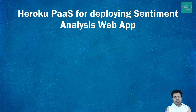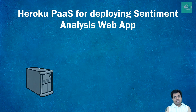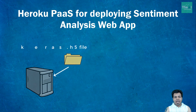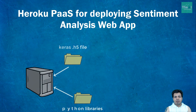I will be using a git workflow to deploy our application. In order to make our app available for the entire world, we need to have a server where we can keep the required files, like the Keras machine learning .h5 extension file, all the Python libraries required to run our application, and other supporting add-ins.